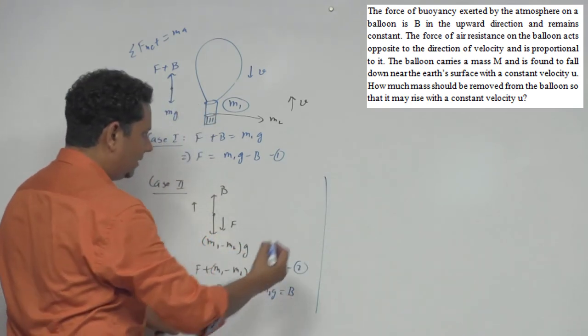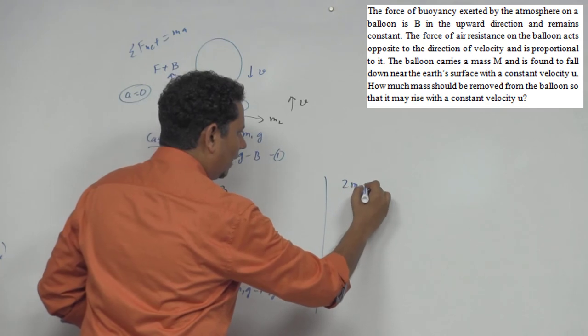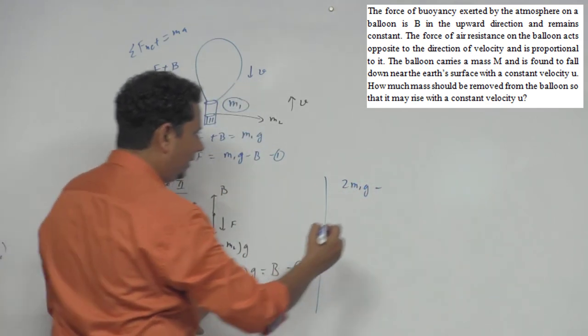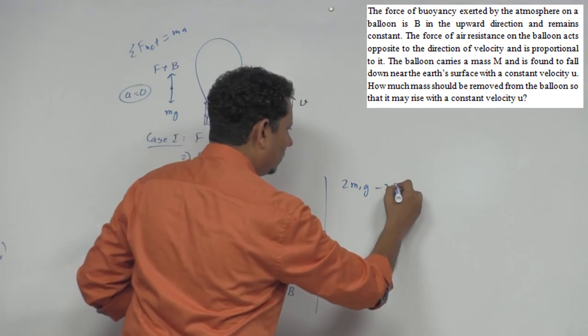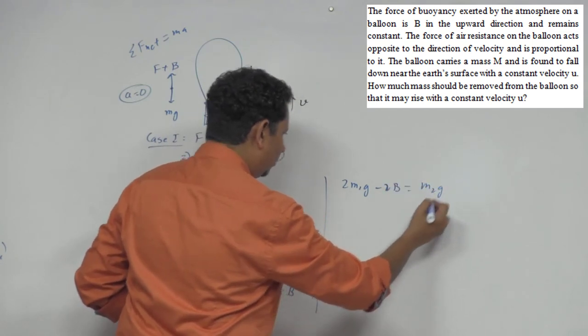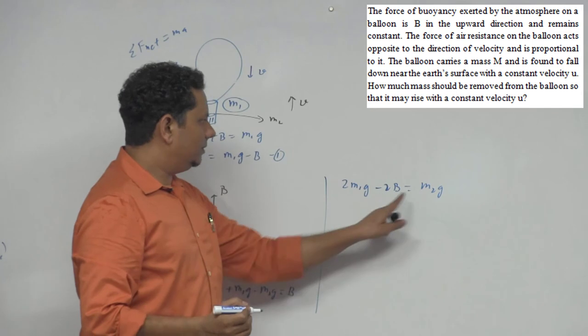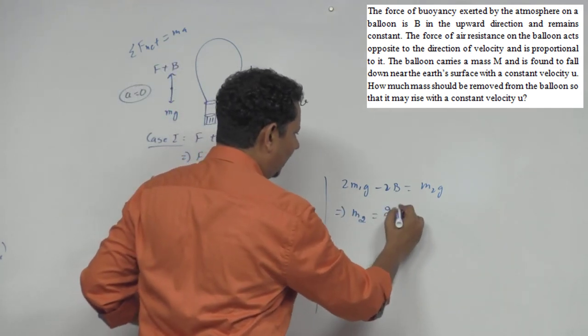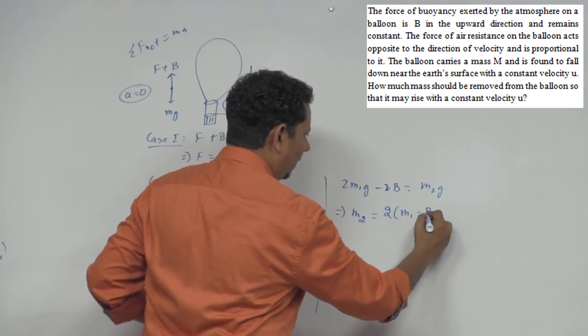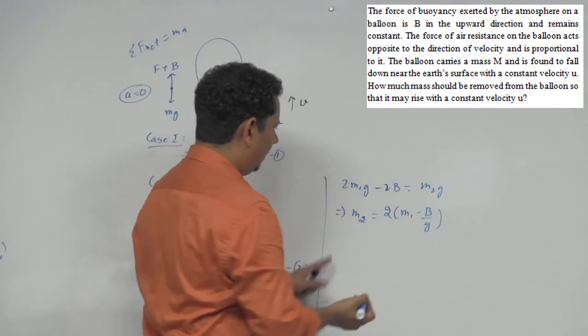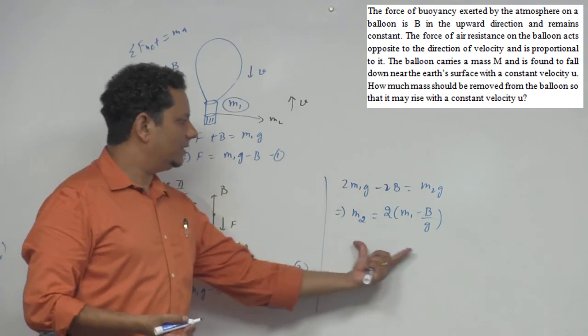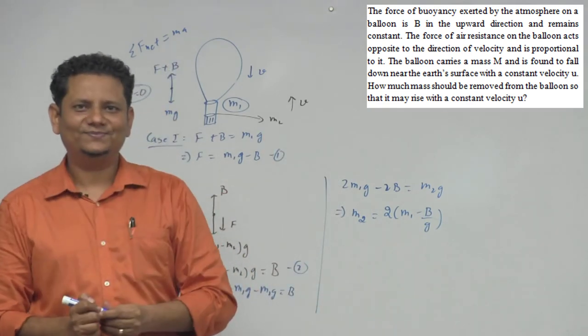We can write this as 2M1 G plus 2B will be equal to M2 G. If we divide by g, this implies M2 value will be twice M1 minus B by G. This is how much mass you need to throw out for this condition. This is your final answer.